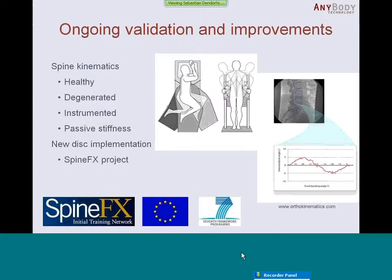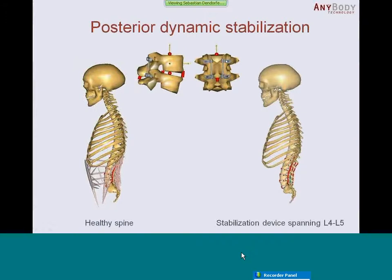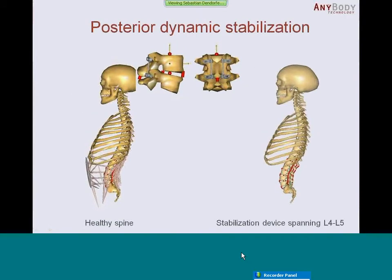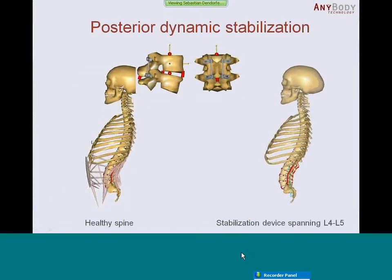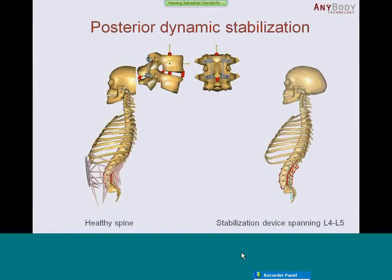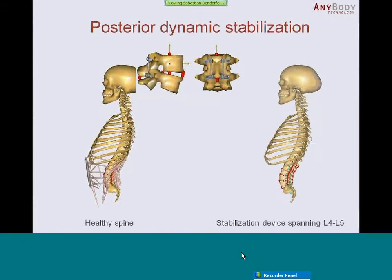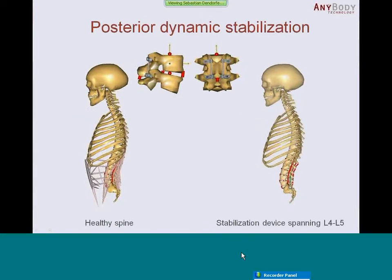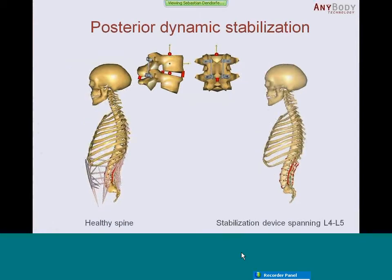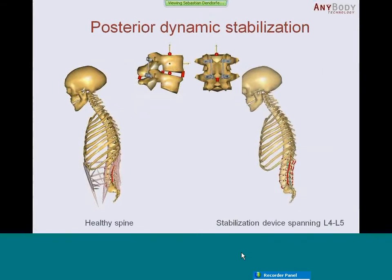Now let's talk about the real topic of the webcast: the posterior dynamic stabilization device. With this new force-dependent kinematics feature, it is possible to move away from pre-defined spine kinematics and let the spine kinematics be determined by forces. This opens the possibility to analyze implants like a dynamic stabilization device, or any other device that influences spine kinematics. In the two animations you can see on the left side a healthy spine with basic features, and on the right side a spine model with the stabilization device implemented in the lumbar spine spanning L4 and L5. You can see force indicators appearing in the model, especially at the end of the motion — this is basically the force acting in this implant. If you look closely, you can also see a change in motion.